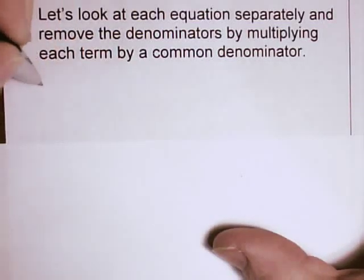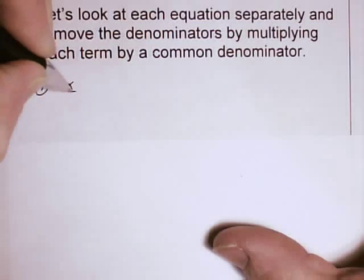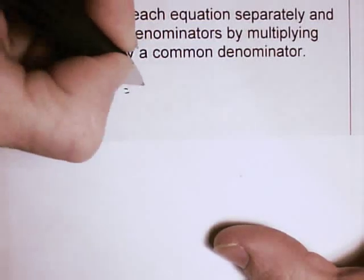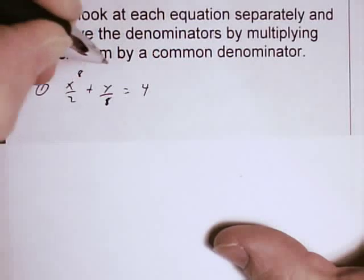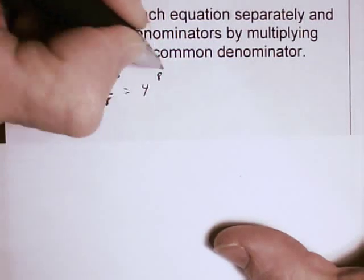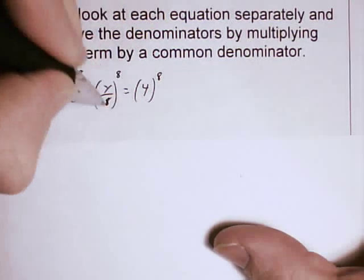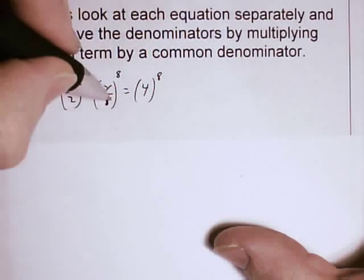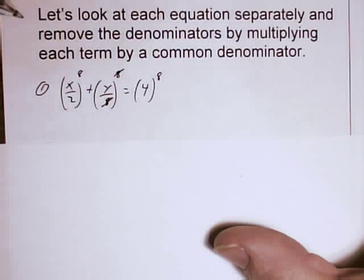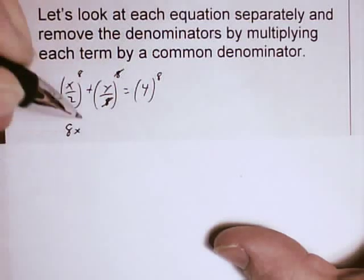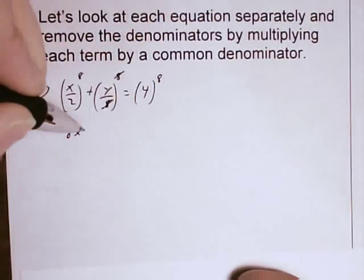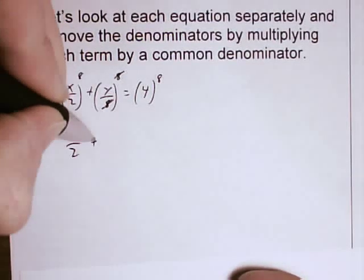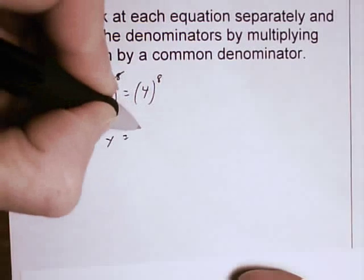So equation 1, x over 2 plus y over 8 equals 4. I'm going to multiply each term by 8. In this case, the 8's go away. If I take 8, this gives me 8x over 2 plus y equals 32.